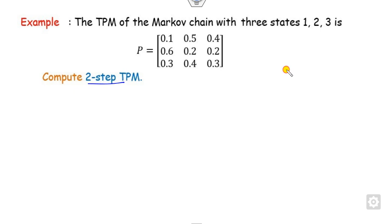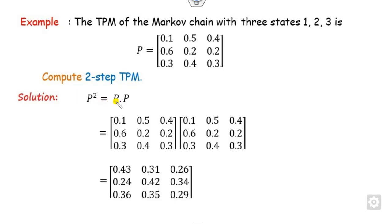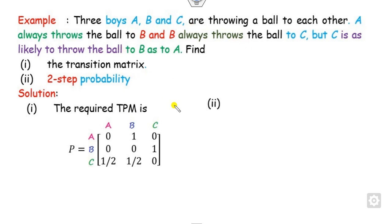A numerical example illustrates computing the two-step transition probability. The two-step probability p_11^(2) gives the probability that, starting in state 1, the chain returns to state 1 after two steps. Instead of computing conditional probabilities directly, we use the theorem and compute P^2 = P × P. The result gives p_11^(2) = 0.43, meaning after two steps the probability of being in state 1 is 0.43.